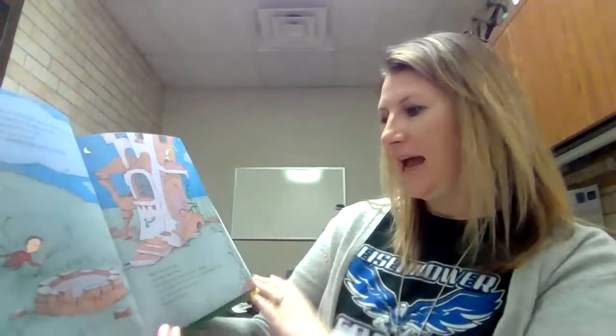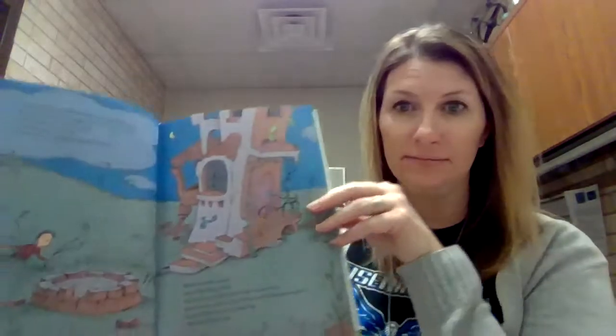At the far end of town where the grickle grass grows and the wind smells slow and sour when it blows and no birds ever sing excepting old crows is the street of the lifted Lorax. And deep in the grickle grass, some people say, if you look deep enough, you can still see today where the Lorax once stood just as long as it could before somebody lifted the Lorax away. What was the Lorax? And why was it there? And why was it lifted and taken somewhere from the far end of town where the grickle grass grows? The old once-ler still lives there. Ask him. He knows.